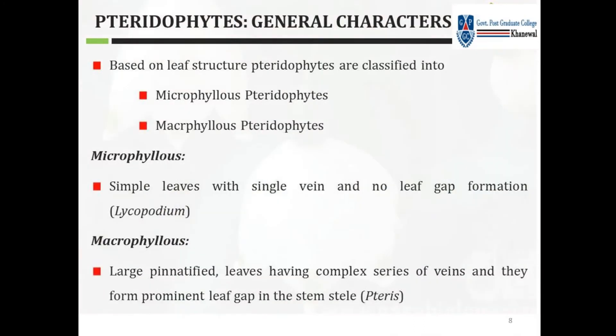Based on leaf structure, Tracheophytes are classified into microphyllous and macrophyllous types. Microphyllous means small, simple leaves with a single vein and no leaf gap formation. Macrophyllous means large pinnate leaves with a complex series of veins, forming a prominent leaf gap in the stem stele.